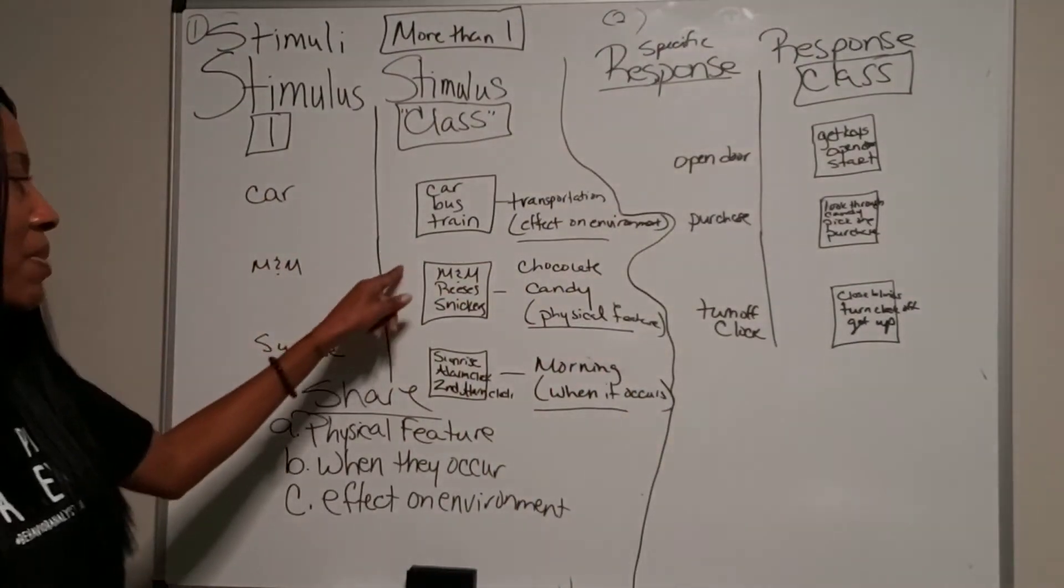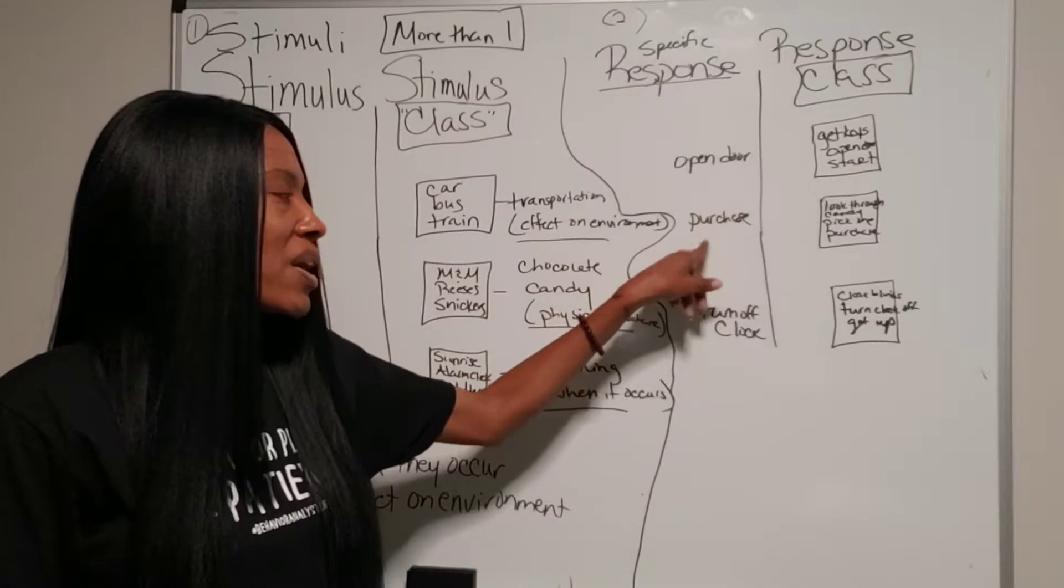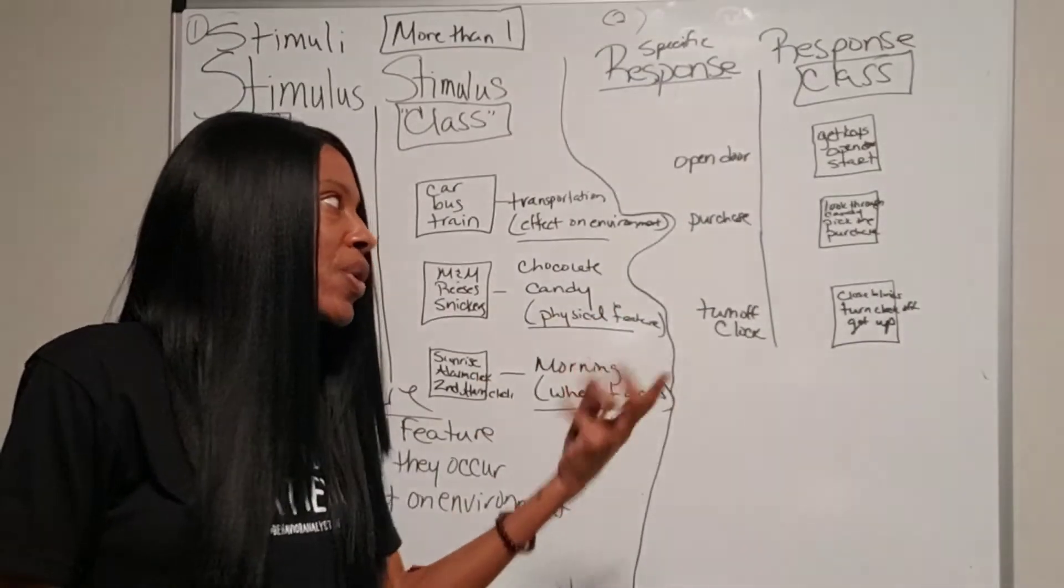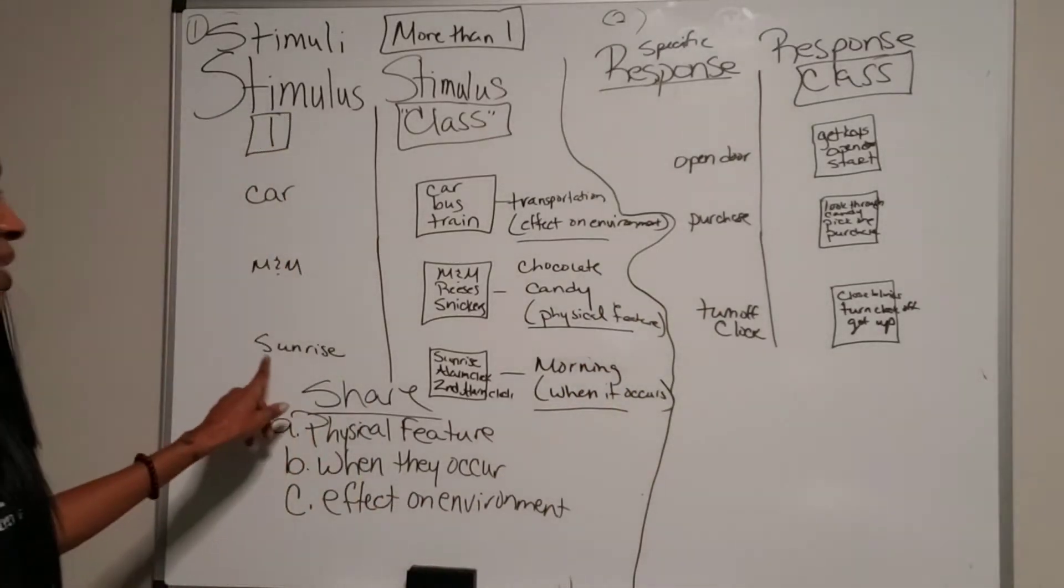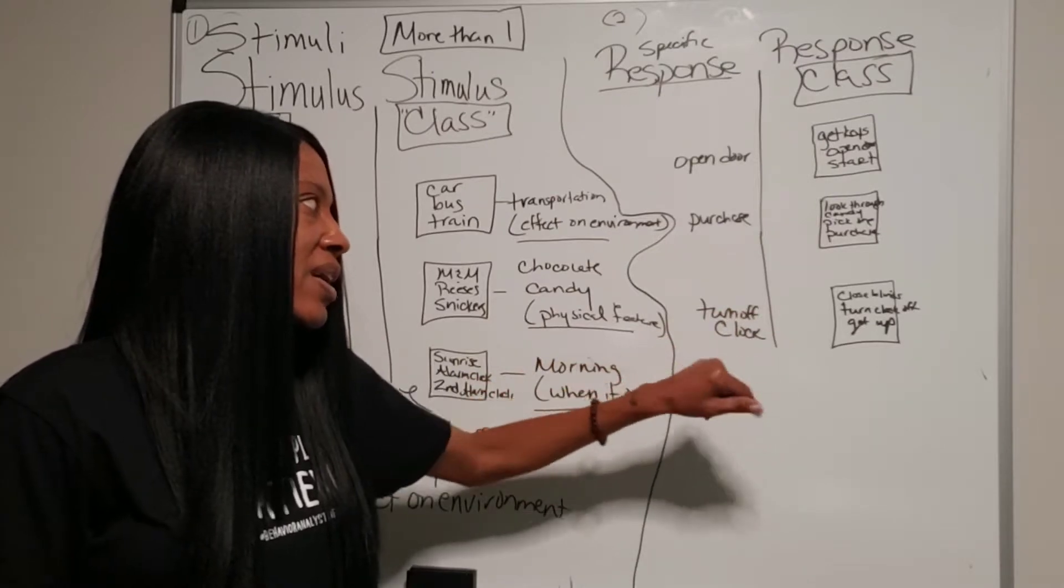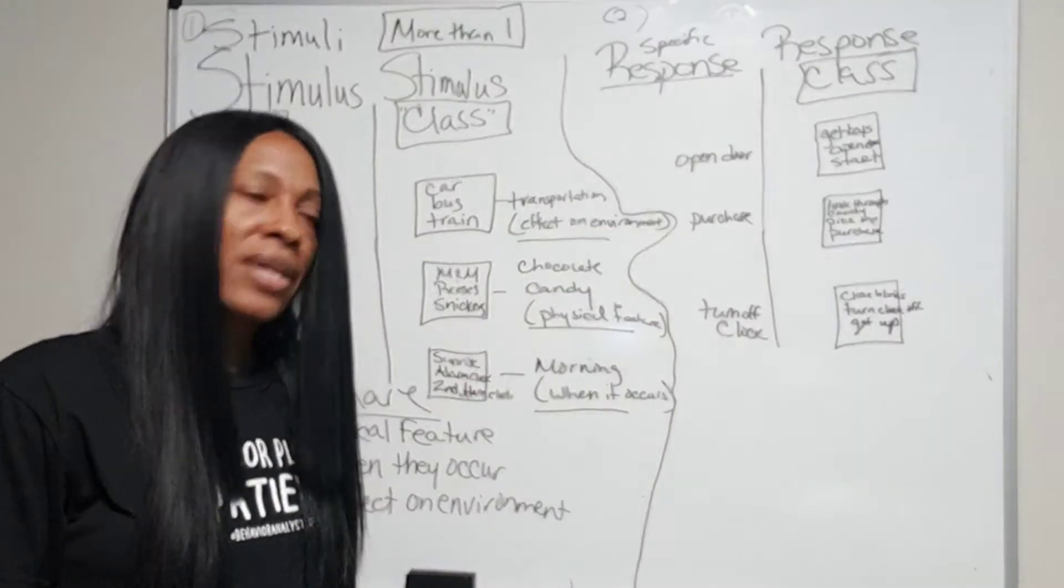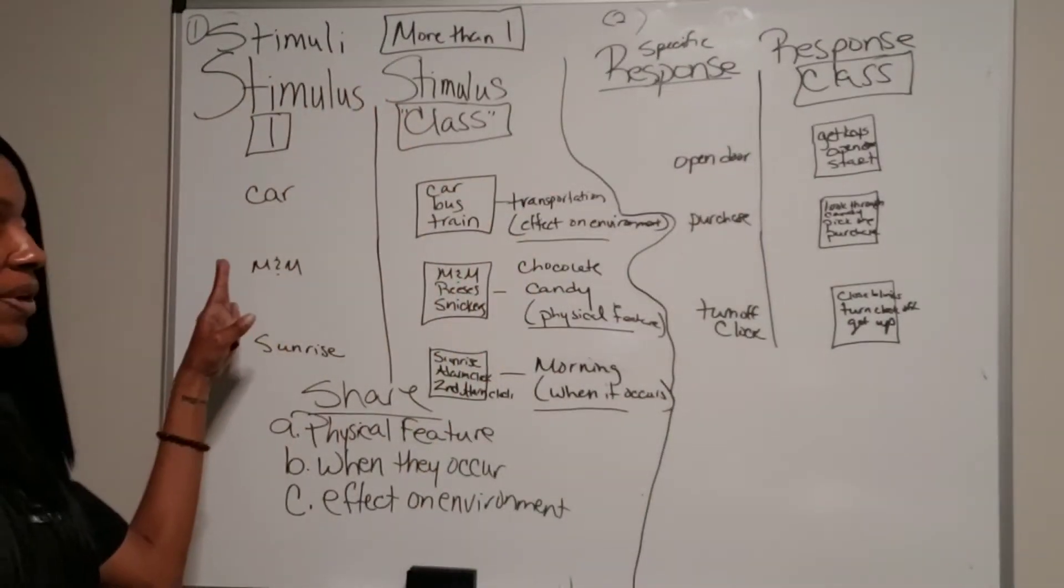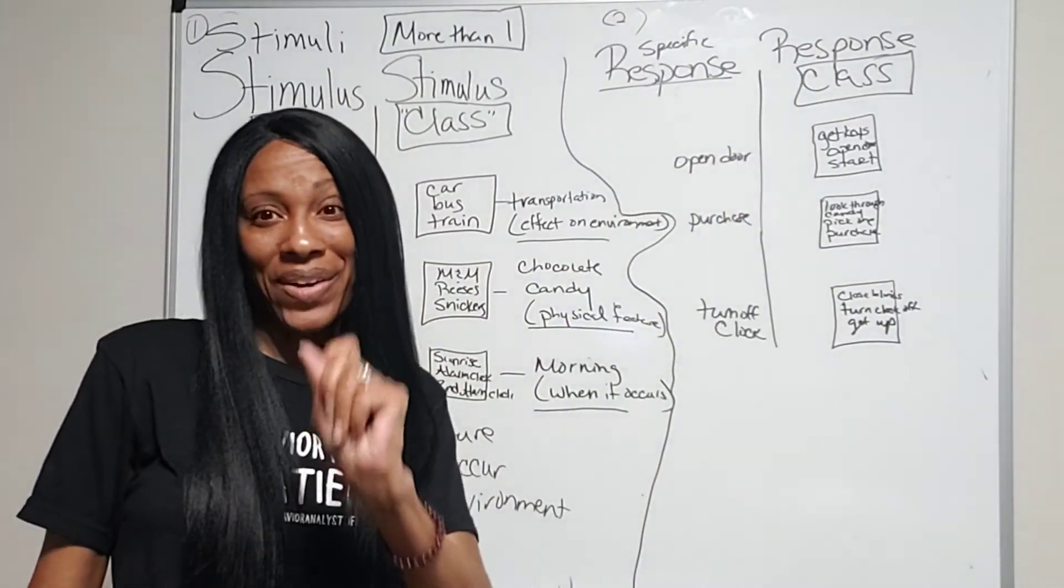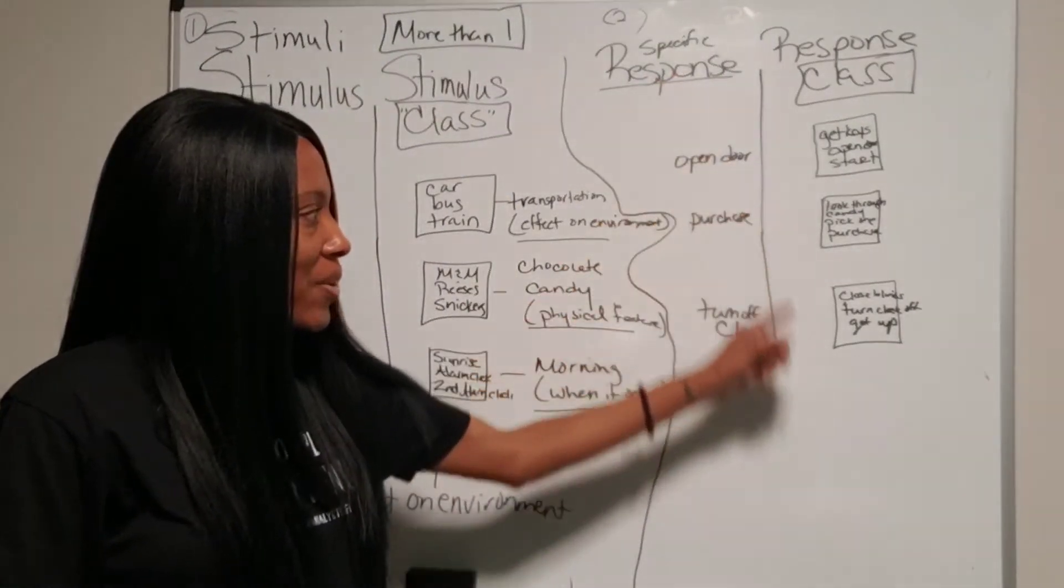So let's just put it together real quick. If you have a car or a bus or a train as a stimulus class, it's going to cause you to open the door. Maybe because before you can get into any of these, you need to open the door in order to get in. If you see M&Ms, Reese's, Snickers, it may cause you to purchase the candy. When the sun rises, you may close the blinds, turn off the clock, get up. So you should always have the stimulus first and it's going to evoke a response that you're going to do.